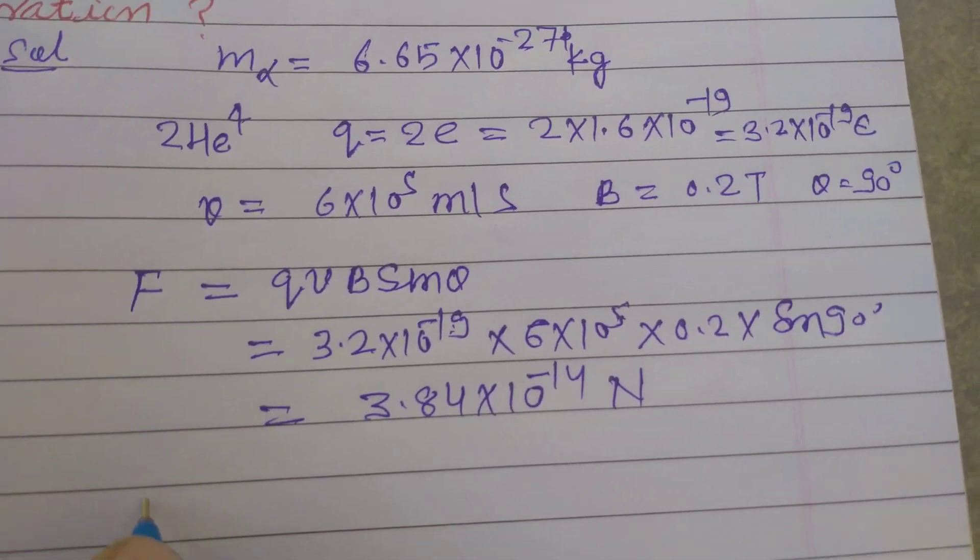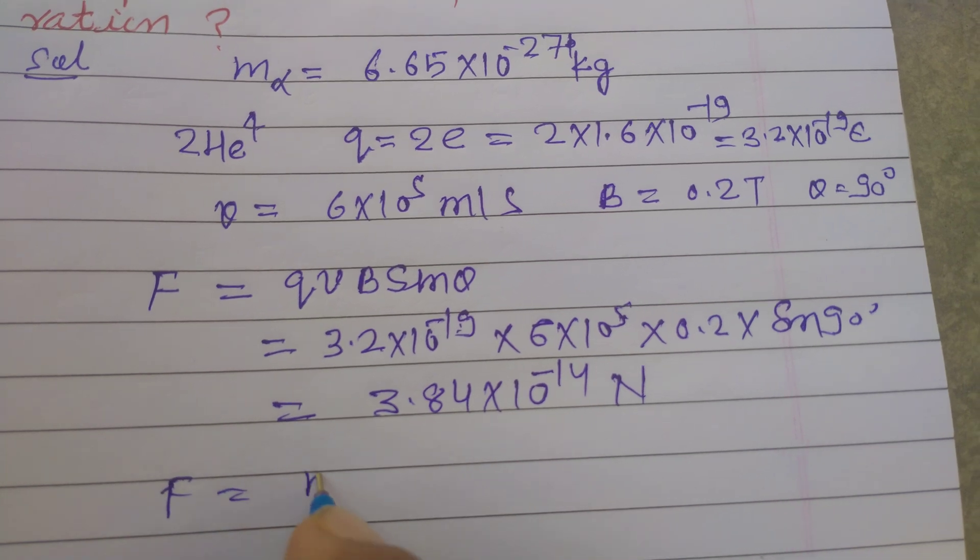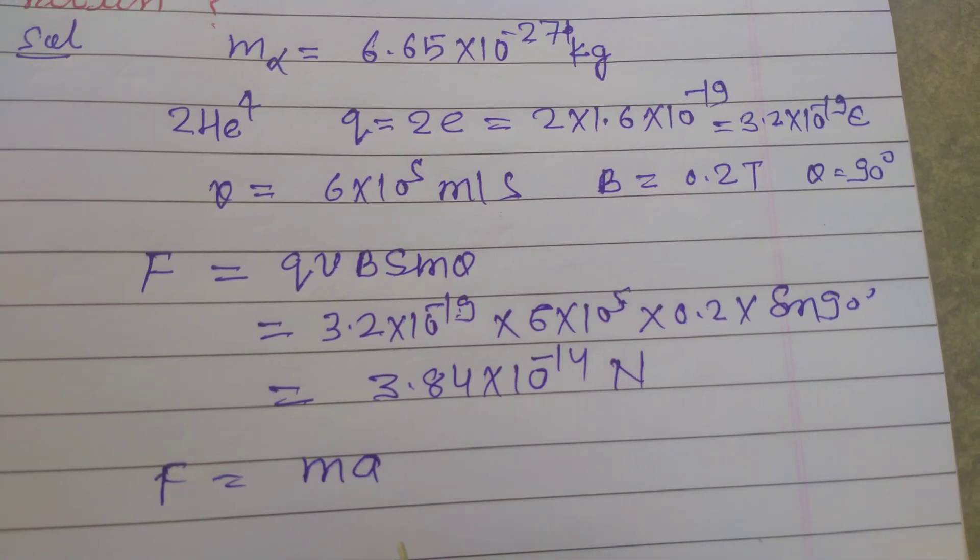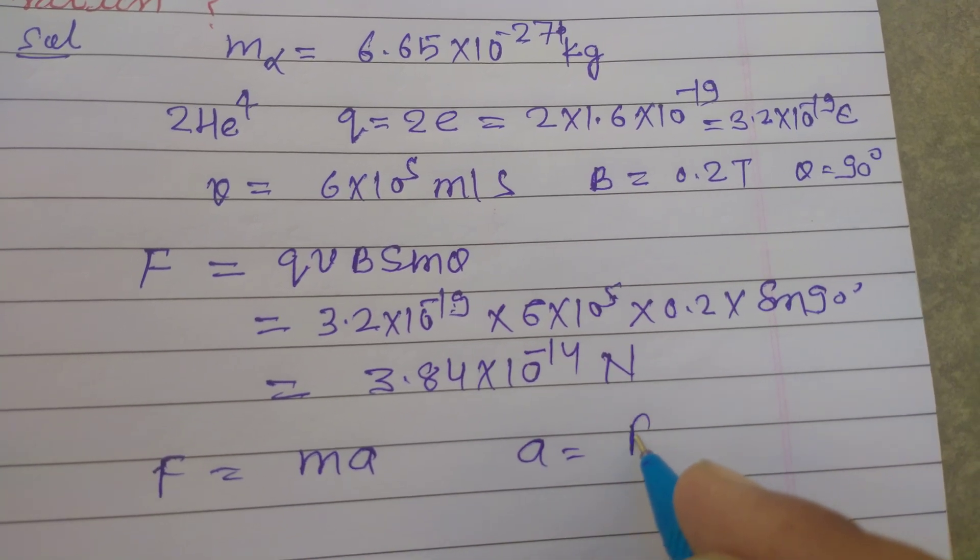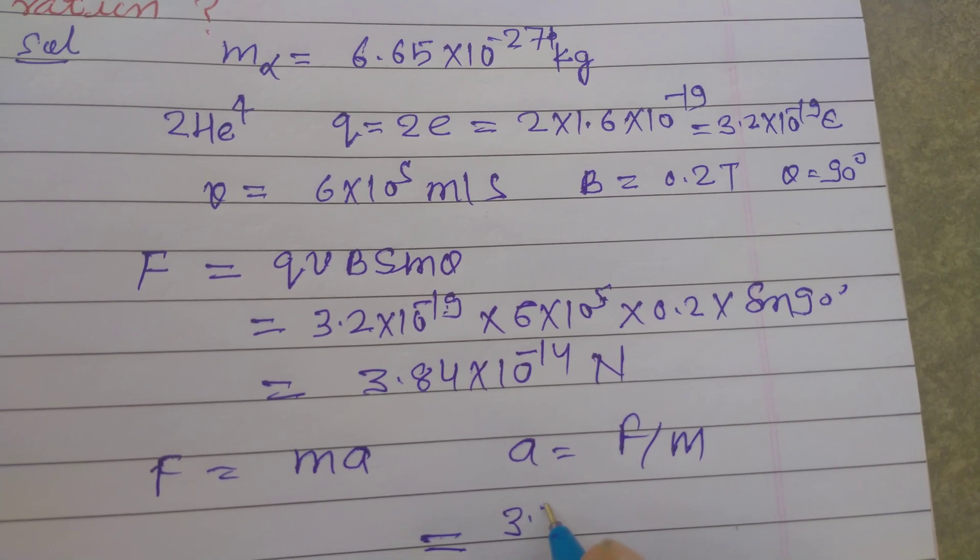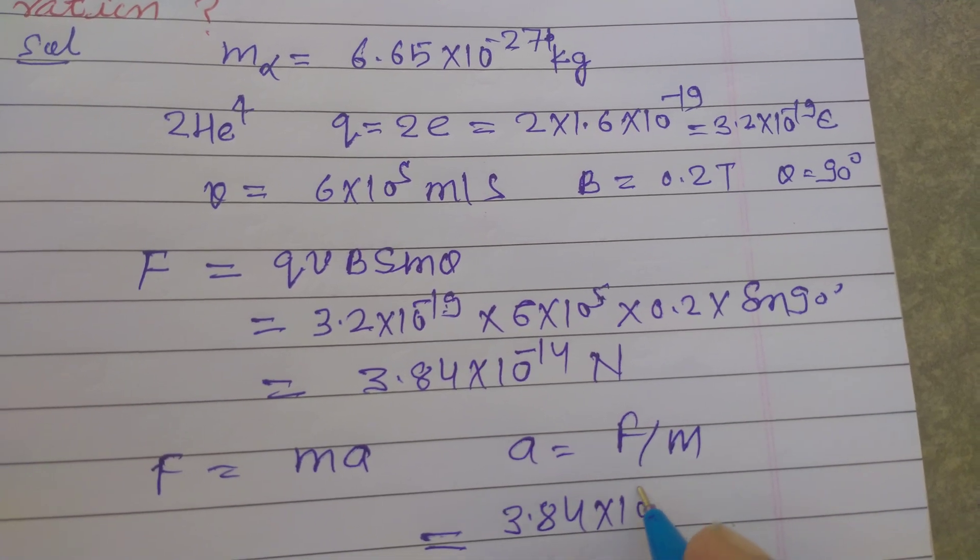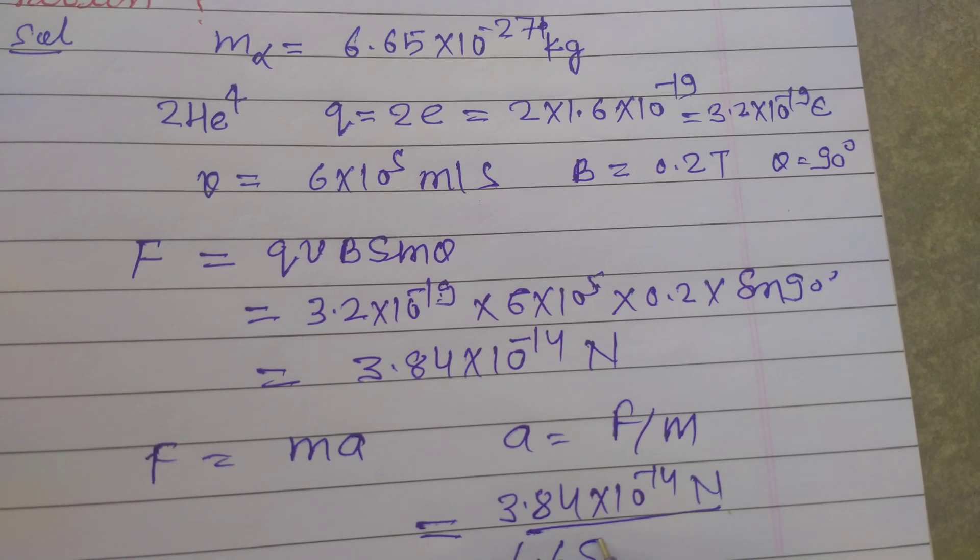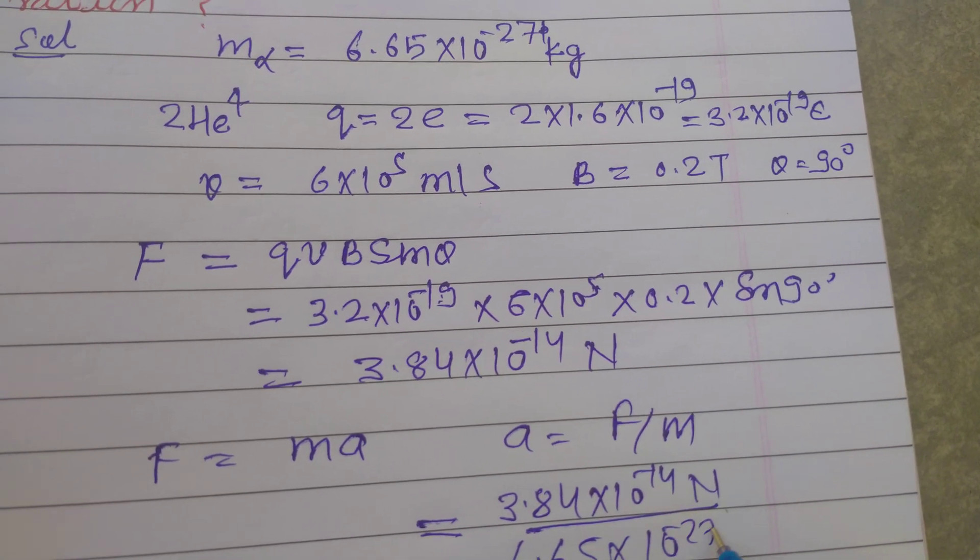And you know that F = ma. Using Newton's second law, a = F/m. So F is 3.84 × 10^-14 Newtons divided by the mass 6.65 × 10^-27 kilograms.